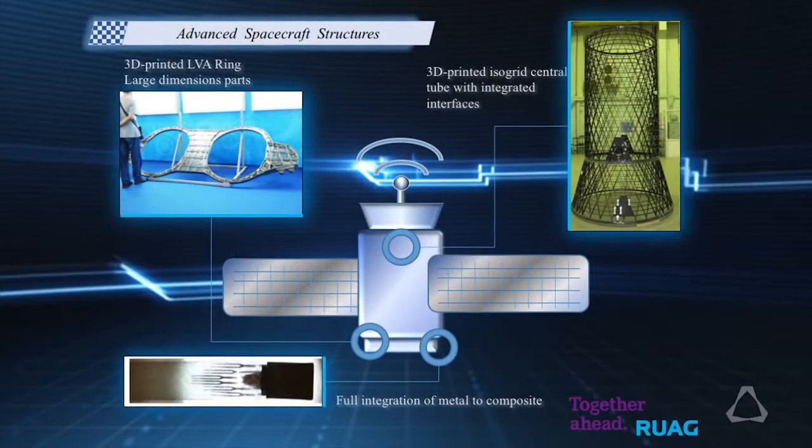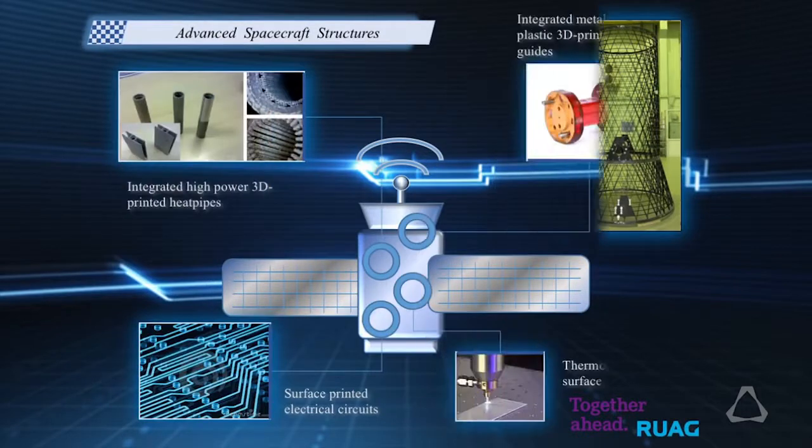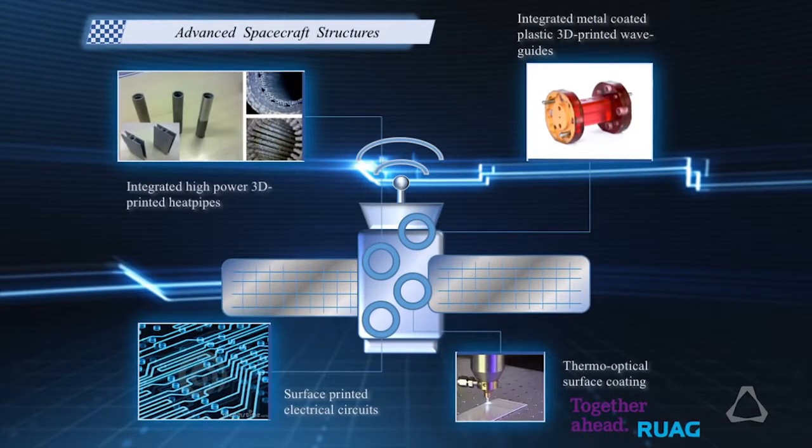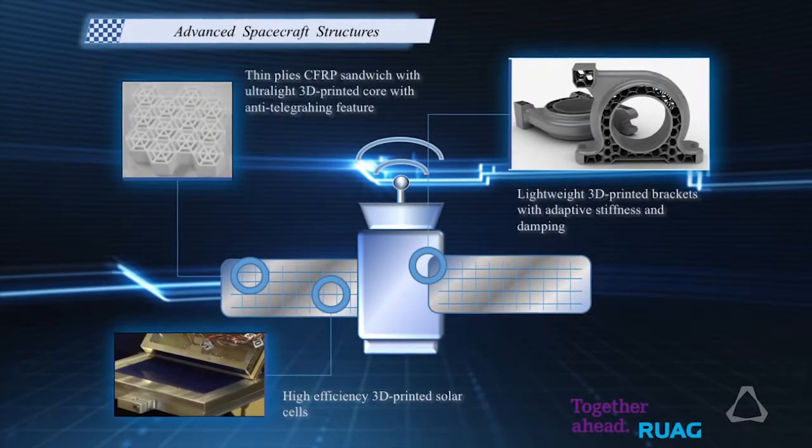RUAG Space is the number one independent supplier of space components. It's 1,100 employees over three countries: Switzerland, Austria, and Sweden.